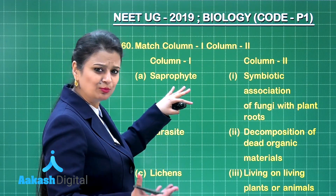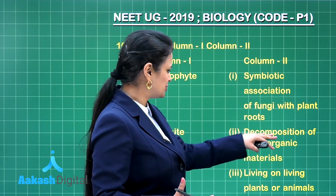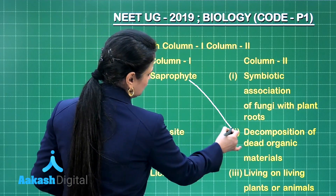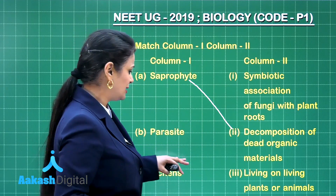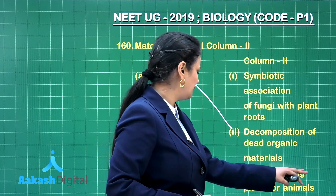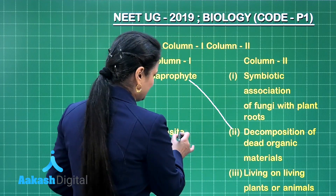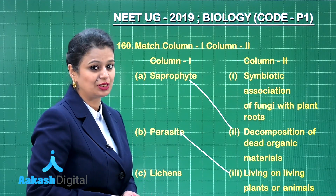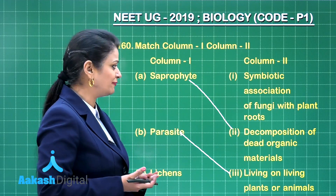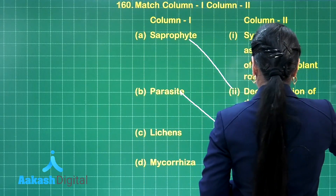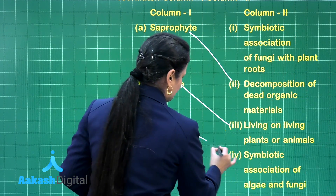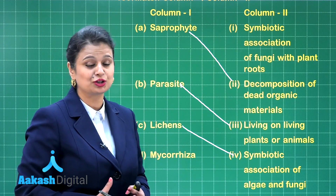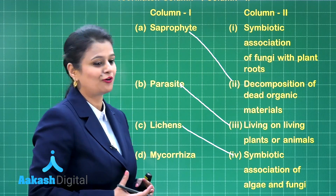Saprophyte is a decomposer — it causes decomposition of dead organic material, so A goes with two. Parasite lives on living plants or animals, so B goes with three. Lichens represent a symbiotic association of algae and fungi, so that goes with four.